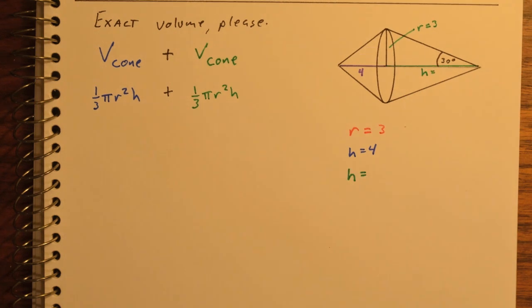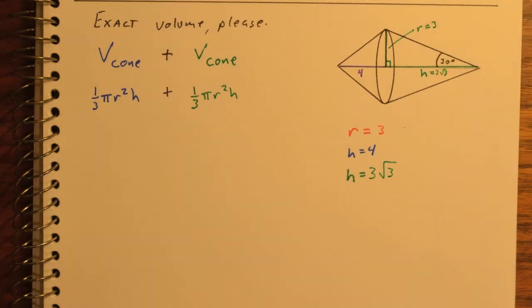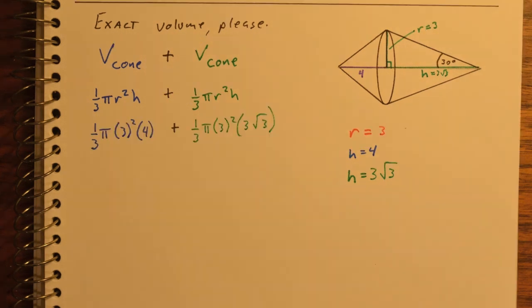The blue height on the left is just given to us, it's 4. The green height is unknown. However, because we've got a right triangle made up of the radius, height, and slant height, and that 30 degree angle, I know that the height of that cone off to the right is 3 root 3. Now, since we want an exact volume, we're going to keep our pi and root 3 as much as possible.